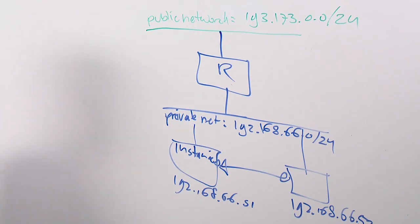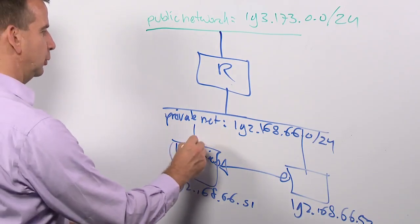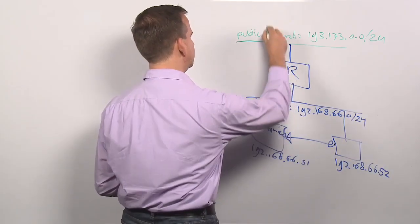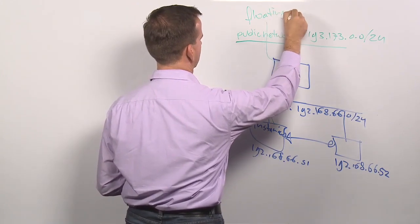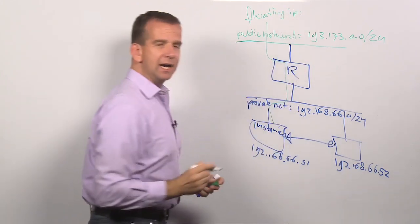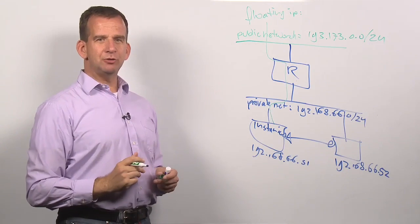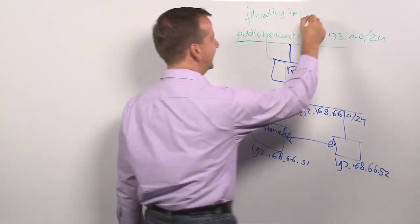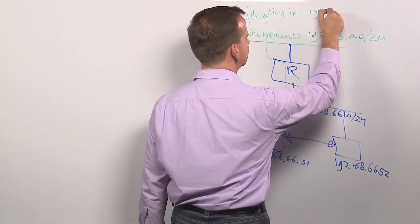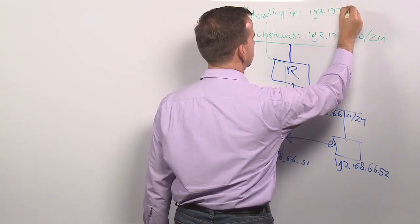What I want you to understand right now is that to be visible from the outside, the instance will get a floating IP address. A floating IP address is an IP address that exists on the external network, and it's a temporary IP address assignment for the instance.